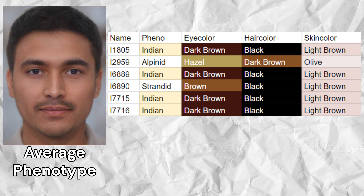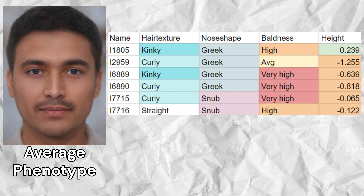The most common predicted hair color among the samples was black, but one sample also scored dark brown as its predicted hair color. The most common predicted skin color was light brown, but one sample also scored olive as its predicted skin color. The most common predicted hair texture was curly and the most common predicted nose shape was Greek. The samples had a high predisposition to male pattern baldness, and five of the six samples were predisposed to lower height.